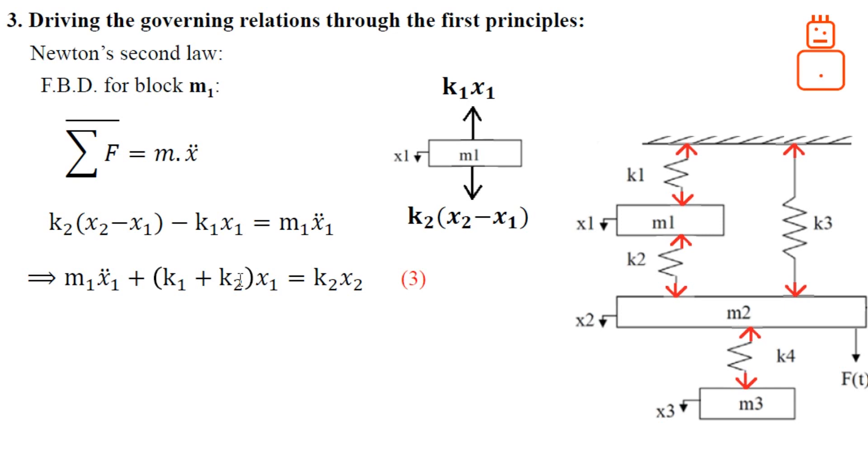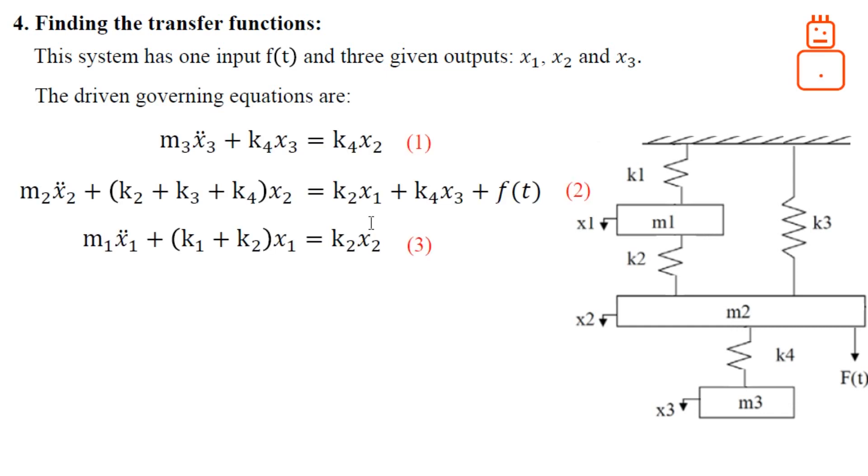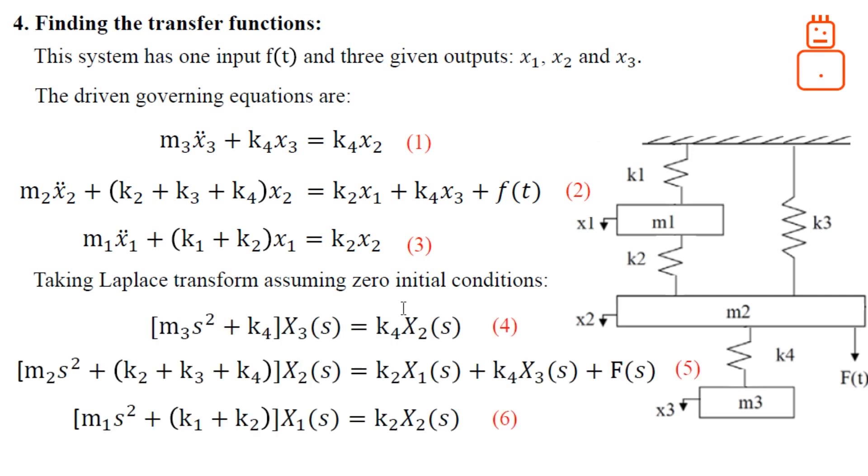So far we have three outputs of the system, which are the positions of m1, m2, and m3, and we have one input which is the force f(t). We can find three transfer functions between the input f and each of the outputs. These are the driving equations which we derived from the first principles, Newton's second law. We can take the Laplace transform of these equations assuming zero initial conditions. These are the corresponding governing equations in the s domain or in the Laplace domain.